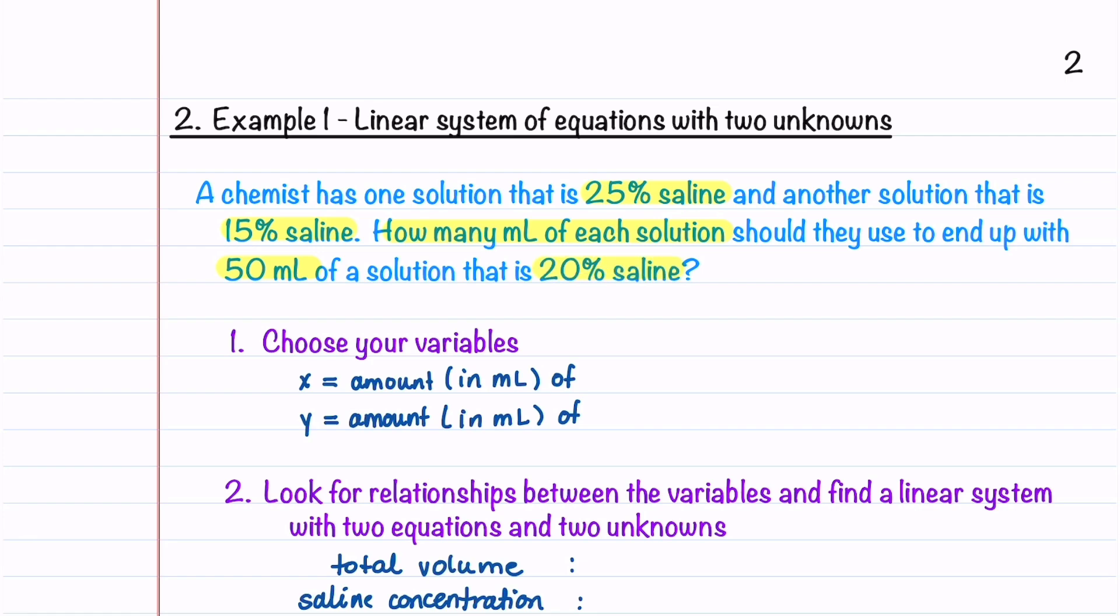With this problem, we have one solution that is 25% saline and another that is 15% saline, and they're going to be combined to make a solution that is 20% saline. Our job is to figure out how much of 25% saline and how much of 15% saline we should use.